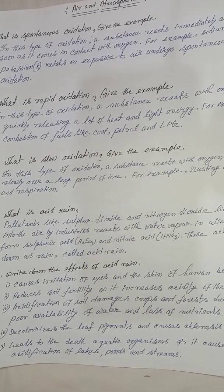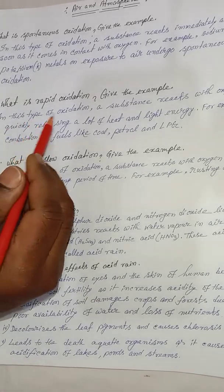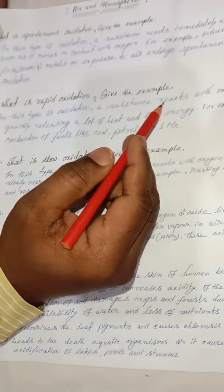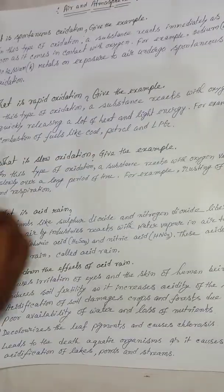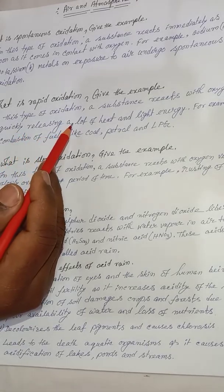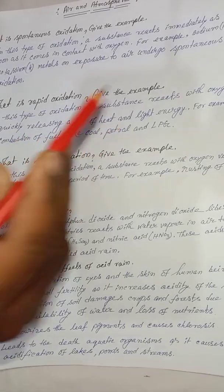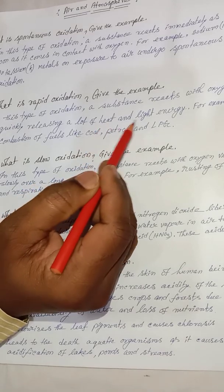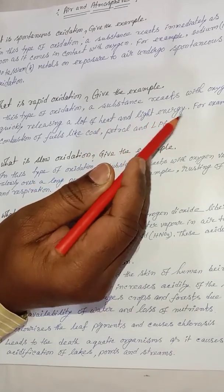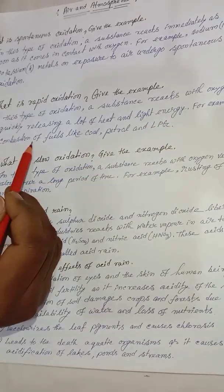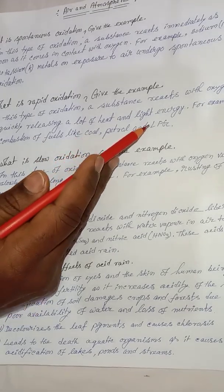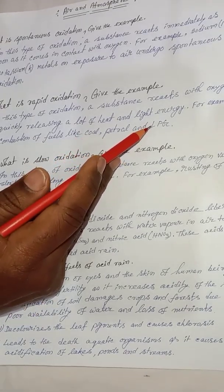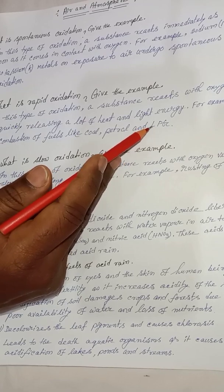Next: what is rapid oxidation? Give an example. In this type of oxidation, a substance reacts with oxygen quickly, releasing a lot of heat and light energy. For example, combustion of fuels like coal, petrol, and LPG (liquefied petroleum gas).